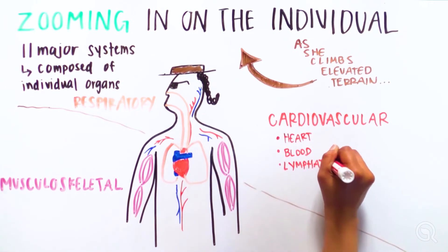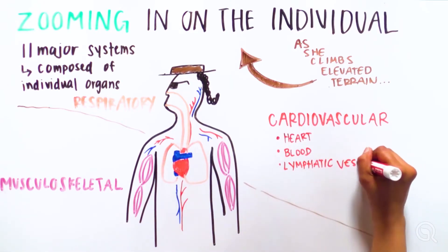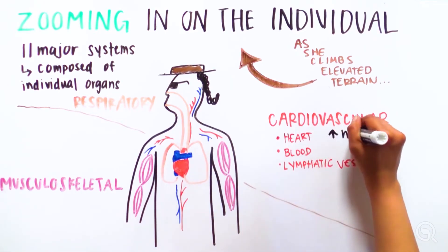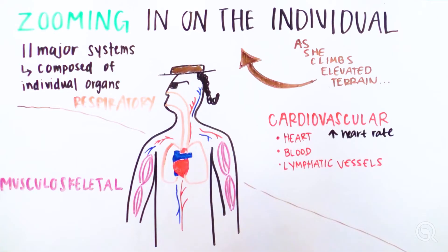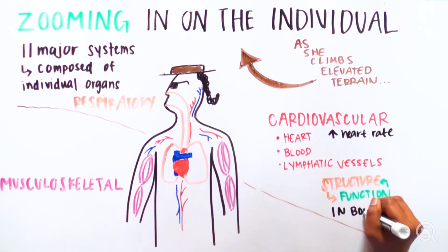The cardiovascular system is made of the heart, blood, and lymphatic vessels that interact to transport essential substances like oxygen to and from all organs and tissues of her body. Structure determines function in a body system.